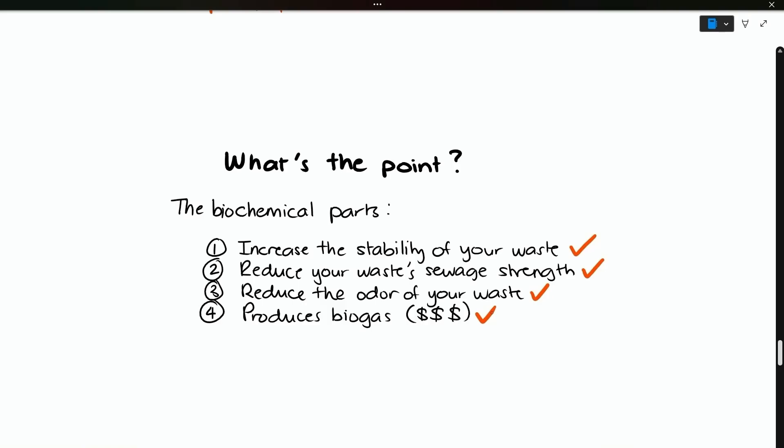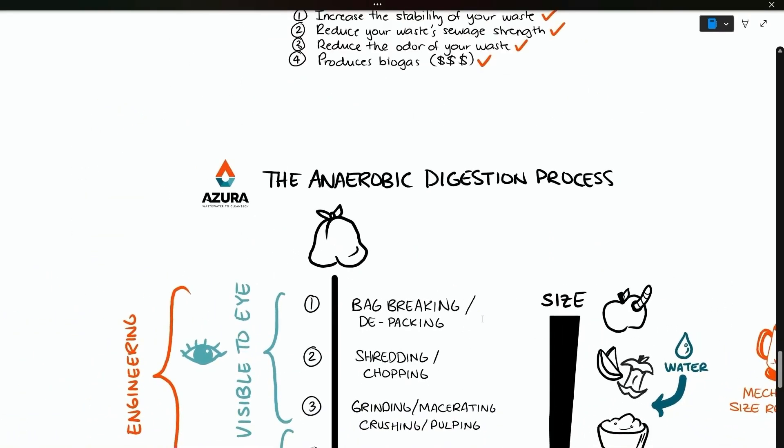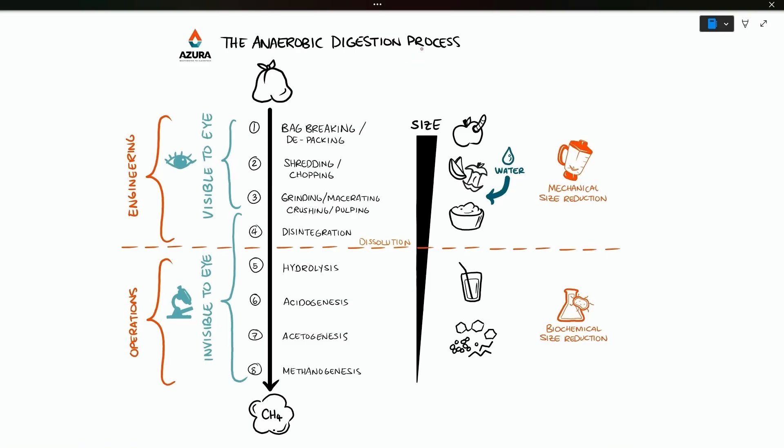Let's summarize what we've learned. This is the anaerobic digestion process. We start with the waste and go through these eight steps to get to gas. The first half is taking your packaged waste, opening it up, and turning it into a paste or smoothie with the addition of water and some kind of chopper or blender action. These are all mechanical steps where we can physically see the size of our waste get smaller. The second half is biochemical size reduction, where everything is happening microscopically with the bugs. They turn your smoothie into juice and then into small molecules and then transform it into gas.